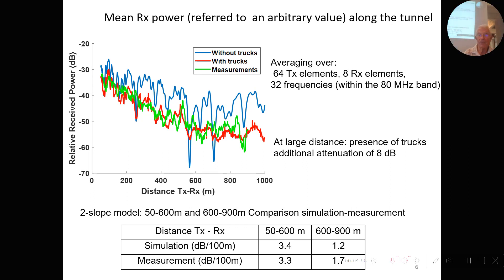This is the average received power, obtained by averaging over the 64 transmitting elements, the 8 receiving elements, and 32 frequencies within the measurement bandwidth. At large distances, the presence of trucks gives an additional attenuation of 8 dB. These curves can be modeled by two-slope curves before and beyond 600 meters. We calculated the slope in these two regions to compare simulation and measurements, and the agreement is quite good.